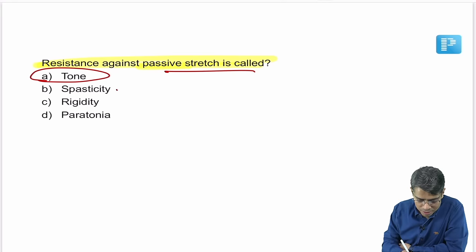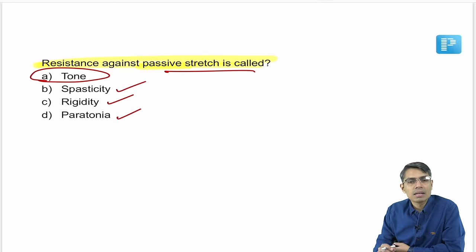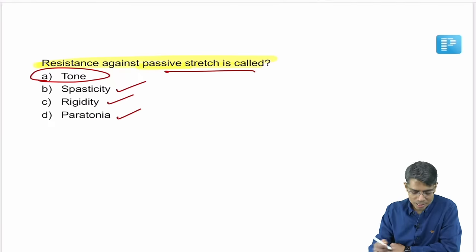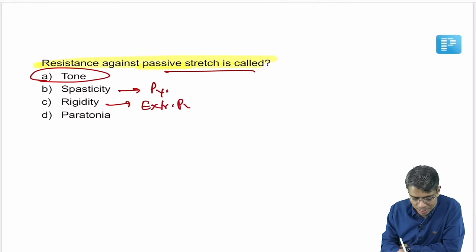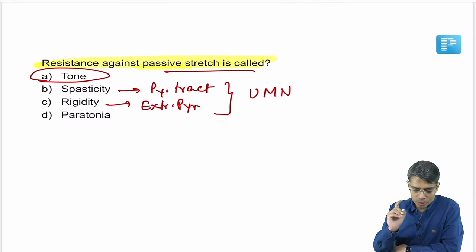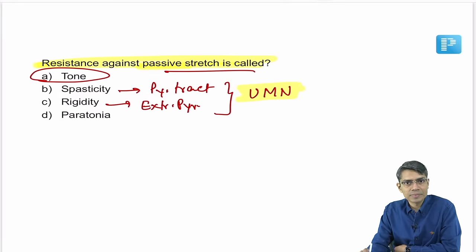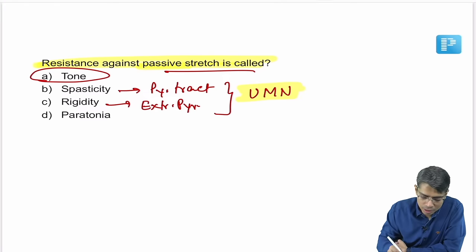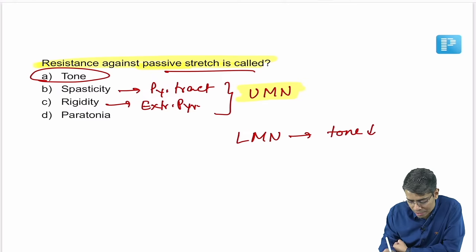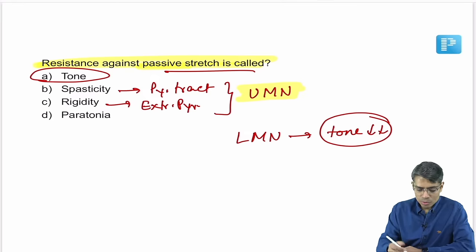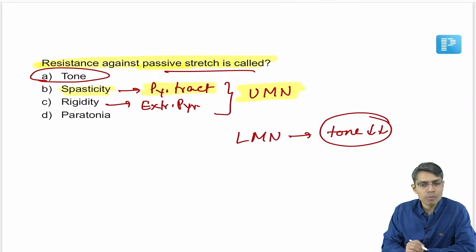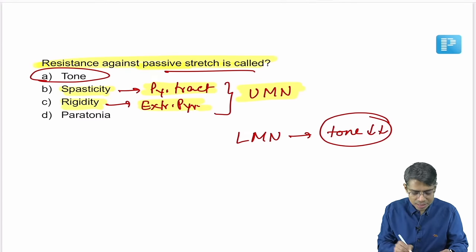Spasticity, rigidity, and paratonia are all hypertonic states of muscle — when muscle tone is very high. Spasticity is due to pyramidal tract lesion; rigidity is due to extrapyramidal tract lesion. Both are part of upper motor neuron lesion, where tone increases. In lower motor neuron lesion, muscle tone decreases.